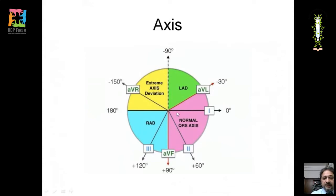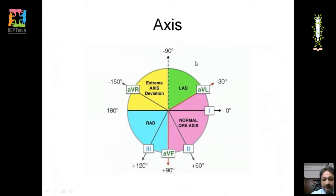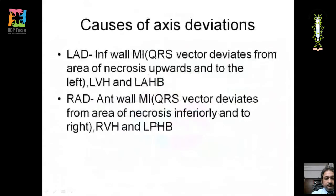In left ventricular hypertrophy, the axis deviates to the left; in right ventricular hypertrophy, to the right. The left bundle divides into two fascicles: the left anterior and left posterior. When the left anterior fascicle is blocked, the impulse travels through the posterior fascicle superiorly and to the left, causing left axis deviation. This explains why we see these axis deviations in these conditions.